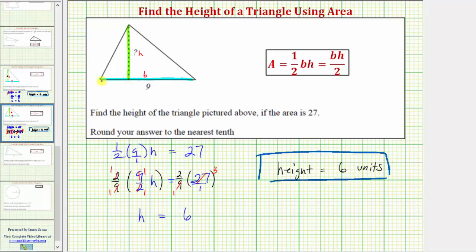A triangle that has a base of nine units and a height of six units has an area of 27 square units. I hope you found this helpful.